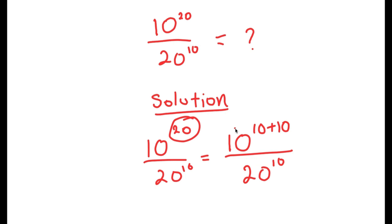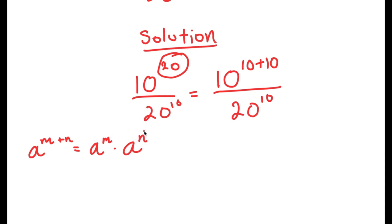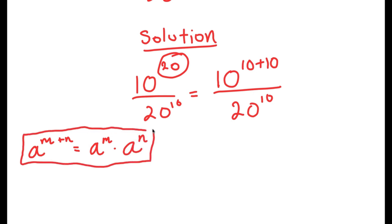The reason I did that is so I can use the property: a to the power of m plus n is equal to a to the power of m times a to the power of n. This is an important property of exponents, and I'm going to use this on 10 to the power of 10 plus 10.